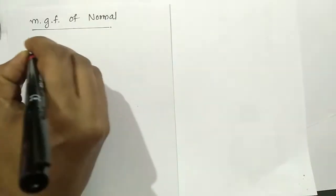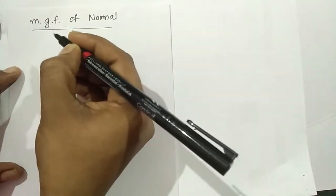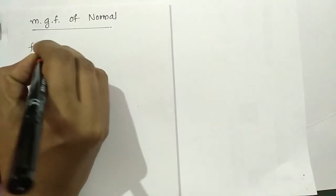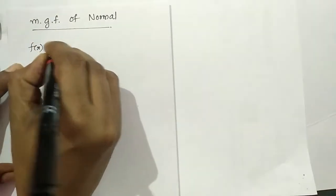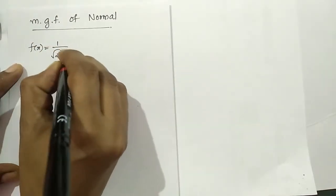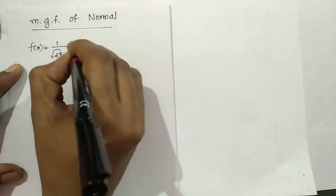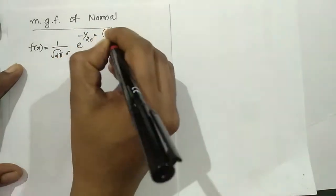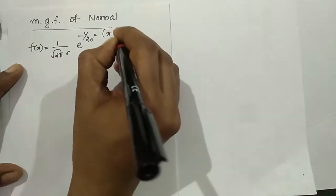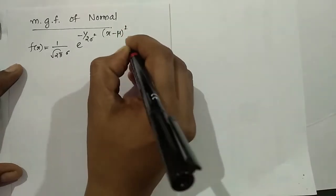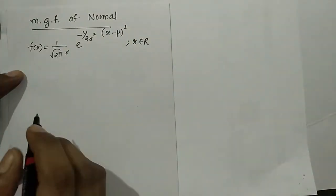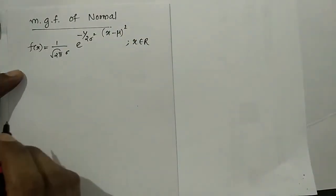Normal distribution with parameters mu and sigma. The density function is: f(x) = 1 divided by root(2 pi) sigma, times e raised to minus 1 by 2 sigma squared, times (x minus mu) squared, where x belongs to real numbers.